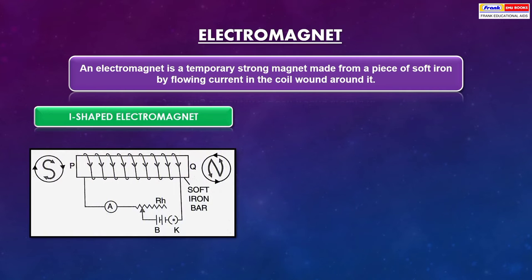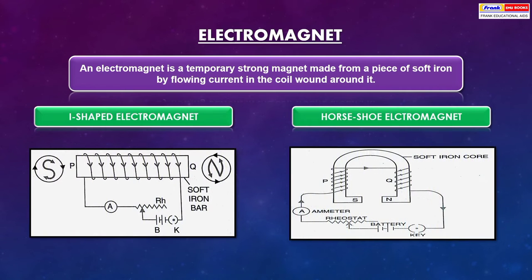I-shaped electromagnet: this is how the diagram will look like. Then horseshoe electromagnet. This is how the electricity is passed through the soft iron of horseshoe design and how it is made like a magnet.